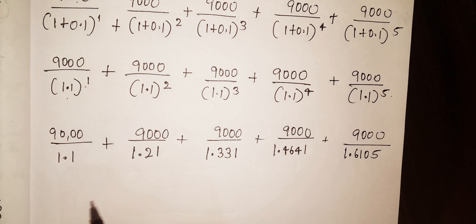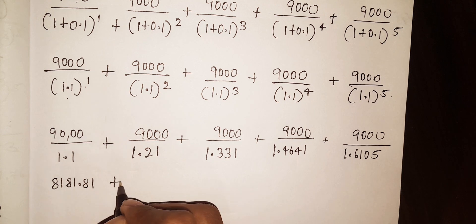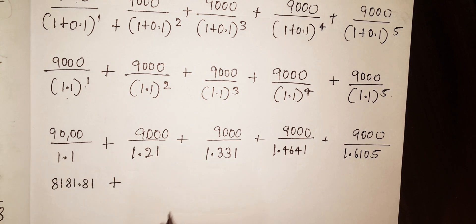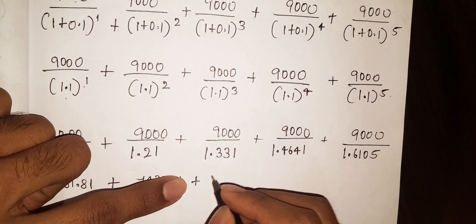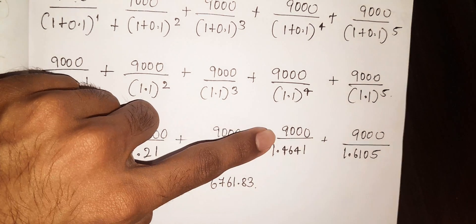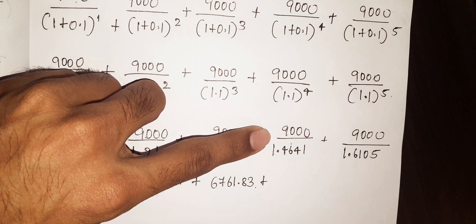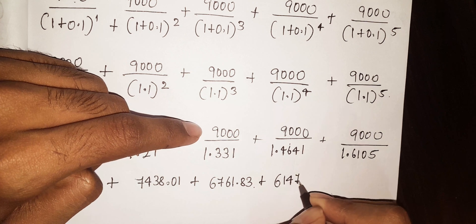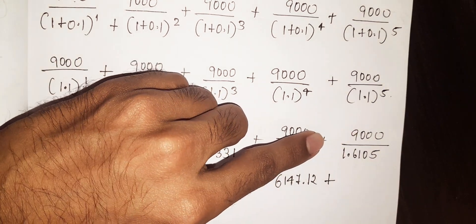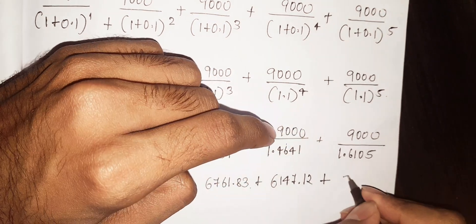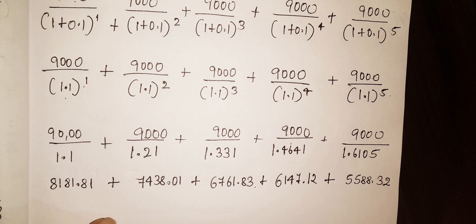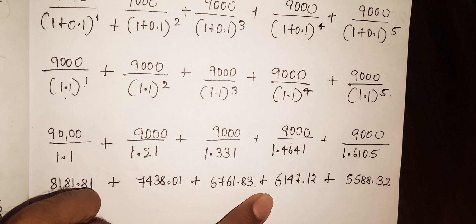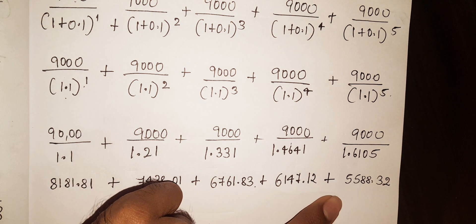So: 9000 divided by 1.1 equals 8181.81, plus 9000 divided by 1.21 equals 7438.01, plus 9000 divided by 1.331 equals 6761.83, plus 9000 divided by 1.4641 equals 6147.12, plus 9000 divided by 1.6105 equals 5588.32. This is our present value: 8181.81 + 7438.01 + 6761.83 + 6147.12 + 5588.32.